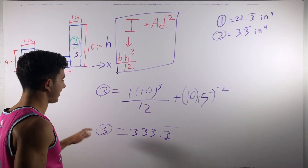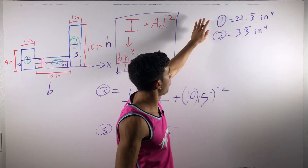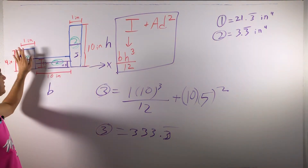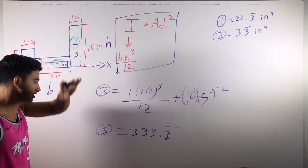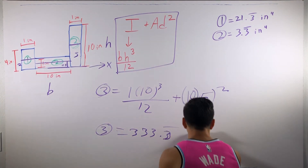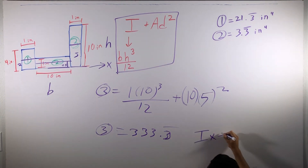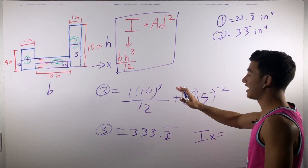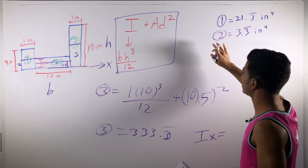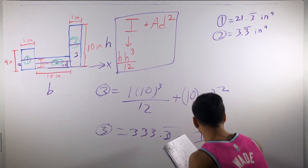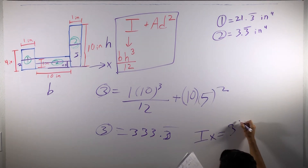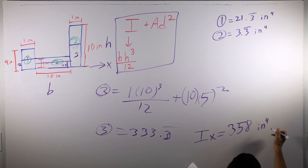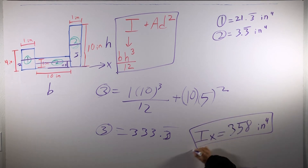In order to find the final answer, you have to add up sections 1, 2, and 3 all together, because we did the moment of inertia by sections and now we just add them all up. The moment of inertia of the cross-sectional area of this beam about the x-axis, adding 1, 2, and 3 together, is going to be 358 inches to the fourth. Don't forget your units — it's inches to the fourth. There's the answer. Take care.